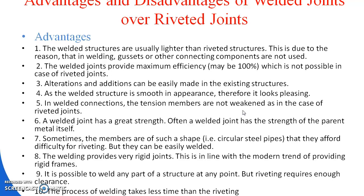In a riveted joint, a specified rivet is used — there is a head part, a shank part, and a tail part of the rivet — which is why it does not look as pleasing as a welded joint. In welded connections, the tension members are not weakened, as is the case in riveted joints.